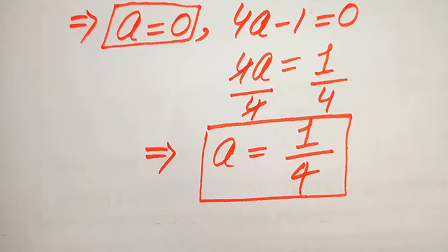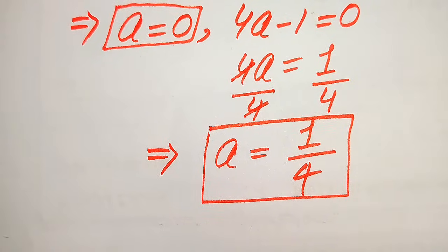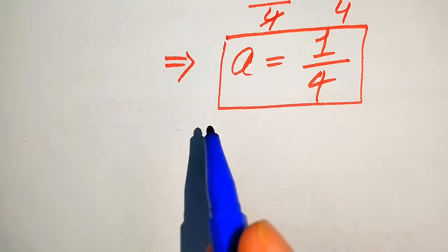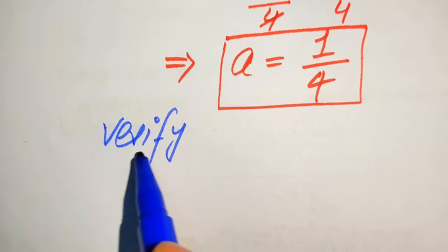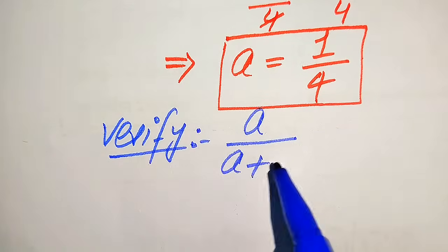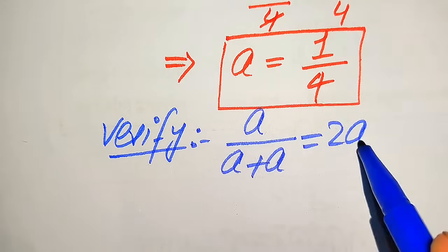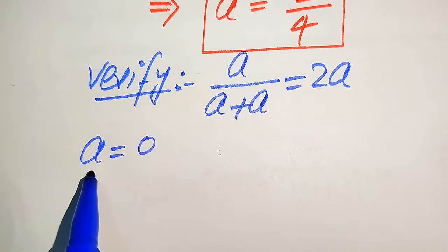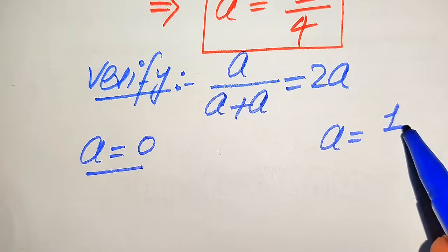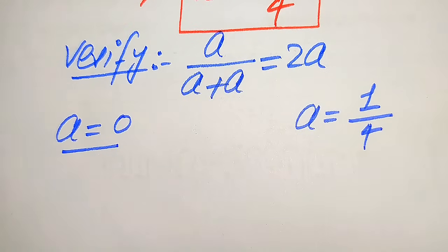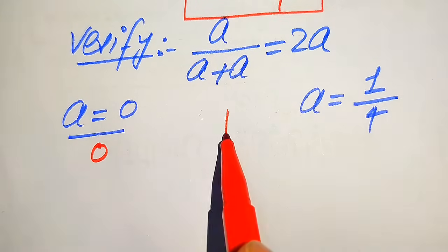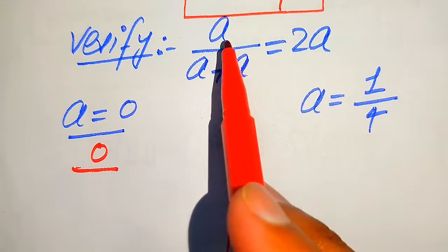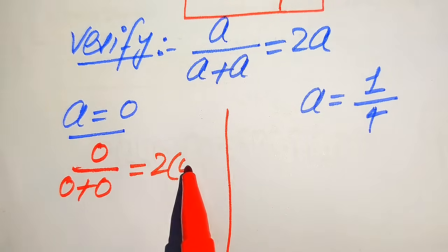In the next steps we verify these two roots to determine which is a solution and which is extraneous. We copy down the original equation: a divided by (a plus a) equals 2a. On one side we verify a equals zero, on the other side we verify a equals one-fourth. Substituting a equals zero gives zero divided by (zero plus zero) equals two times zero.